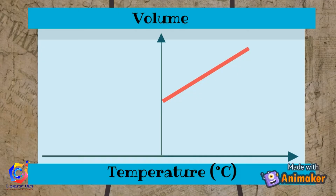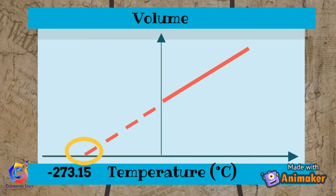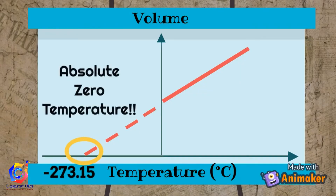And if we extrapolate the graph, the line will eventually intercept the x-axis. Theoretically, at this point, the value should be negative 273.15 degrees, which is the absolute zero temperature.